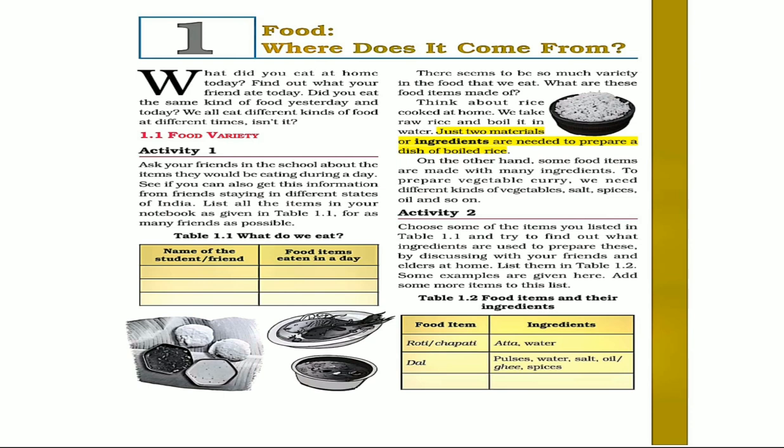Only two ingredients are needed to prepare a dish of boiled rice. On the other hand, some food items are made with many ingredients. To prepare vegetable curry, we need different kinds of vegetables, salt, spices, oil and so on. There are many ingredients required to prepare vegetable curry.